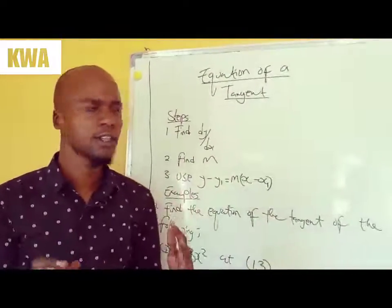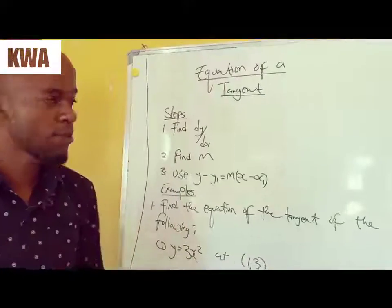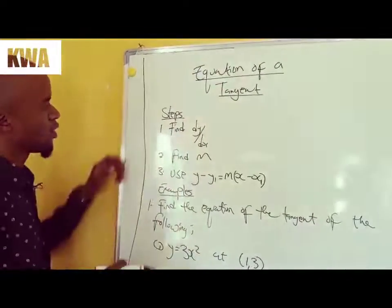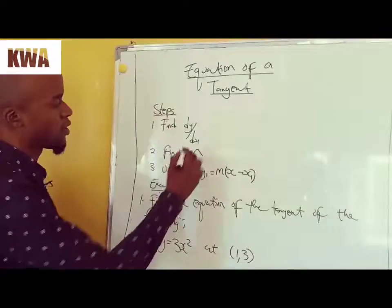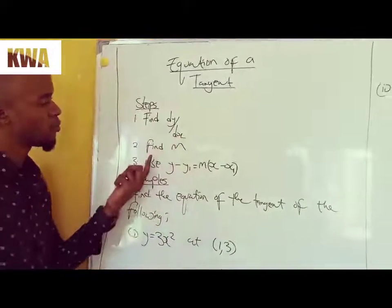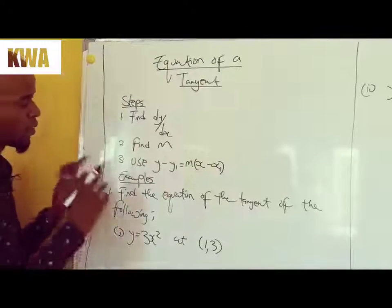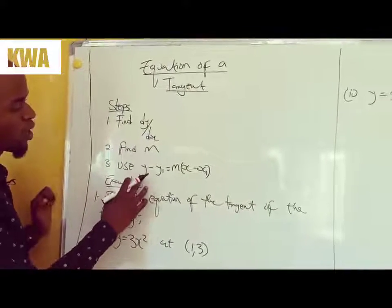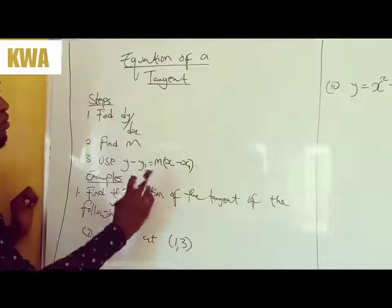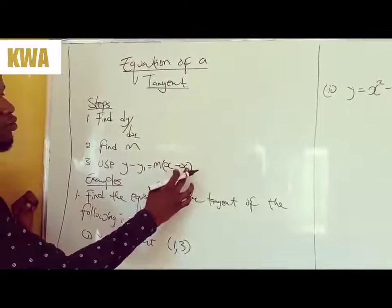This is an easy thing, I'll take you through the steps. There are only three steps. Number one, you should find dy/dx which we looked at last week. Then number two, you find the m, m stands for gradient. Then number three, this is the formula you use: y minus y1 equals m gradient and x minus x1.